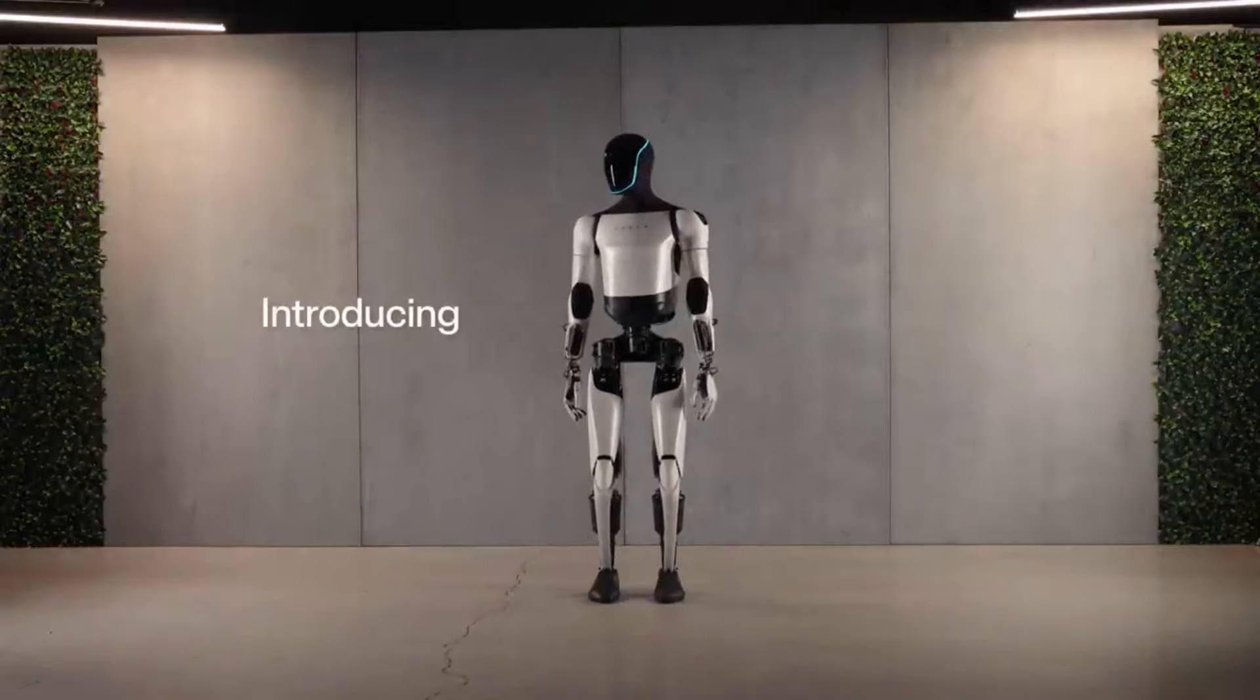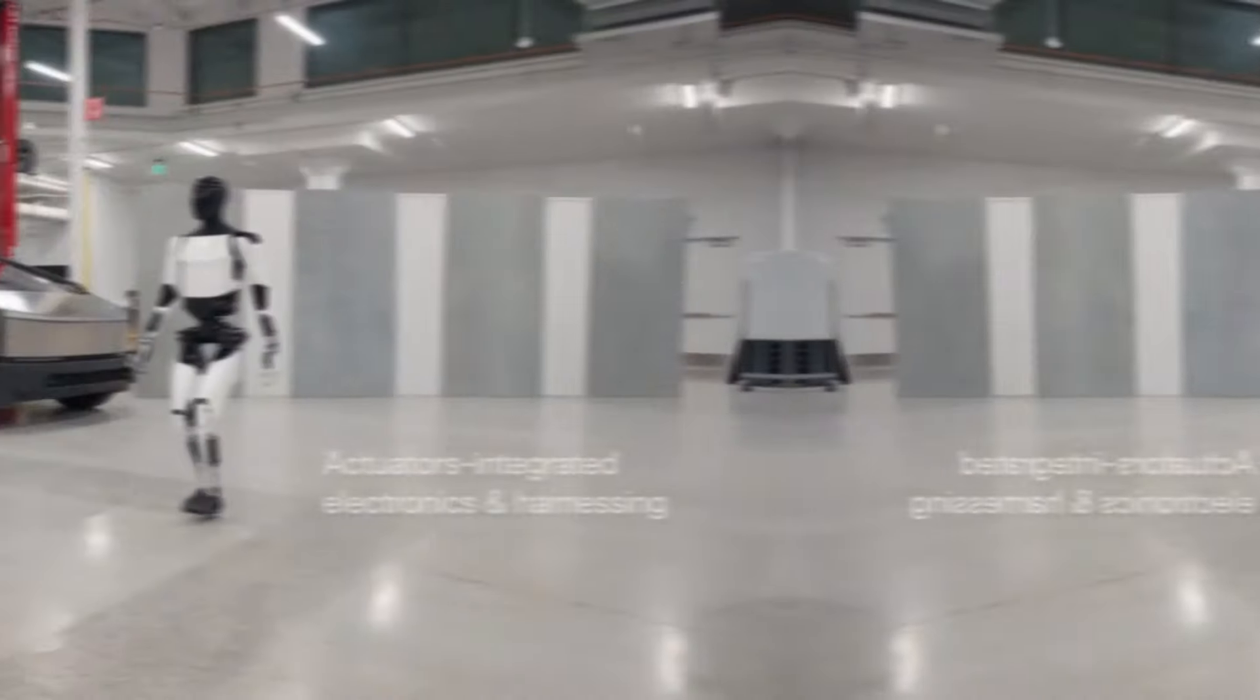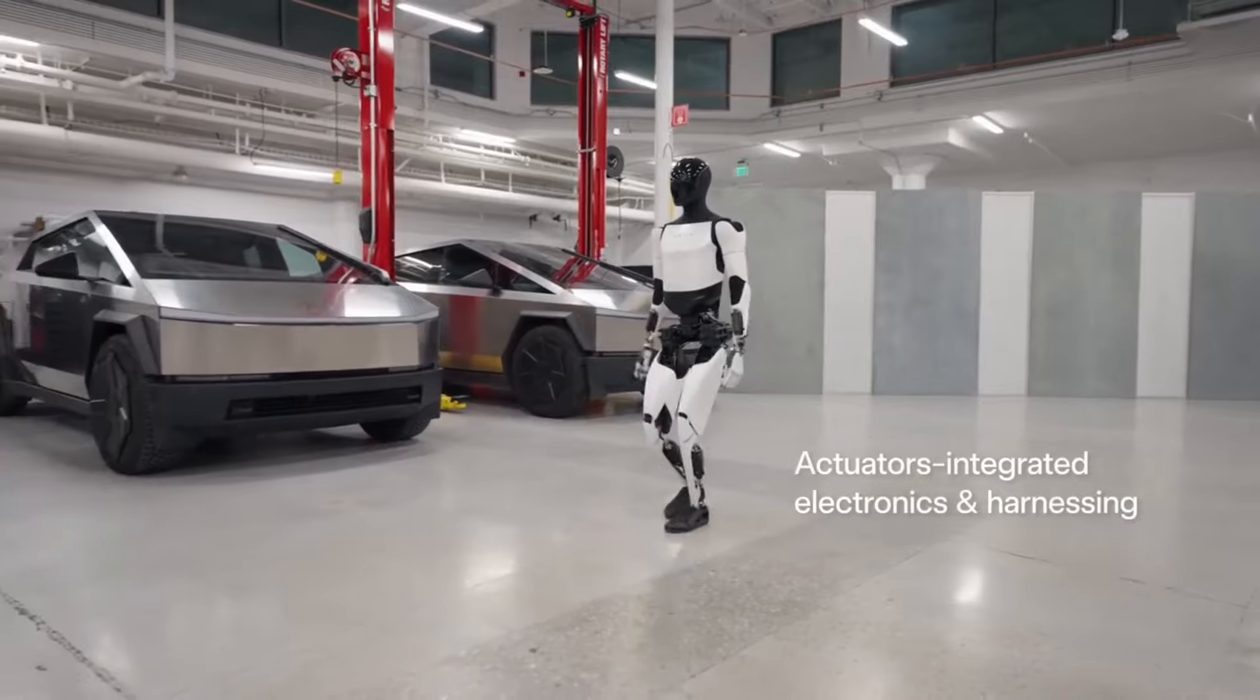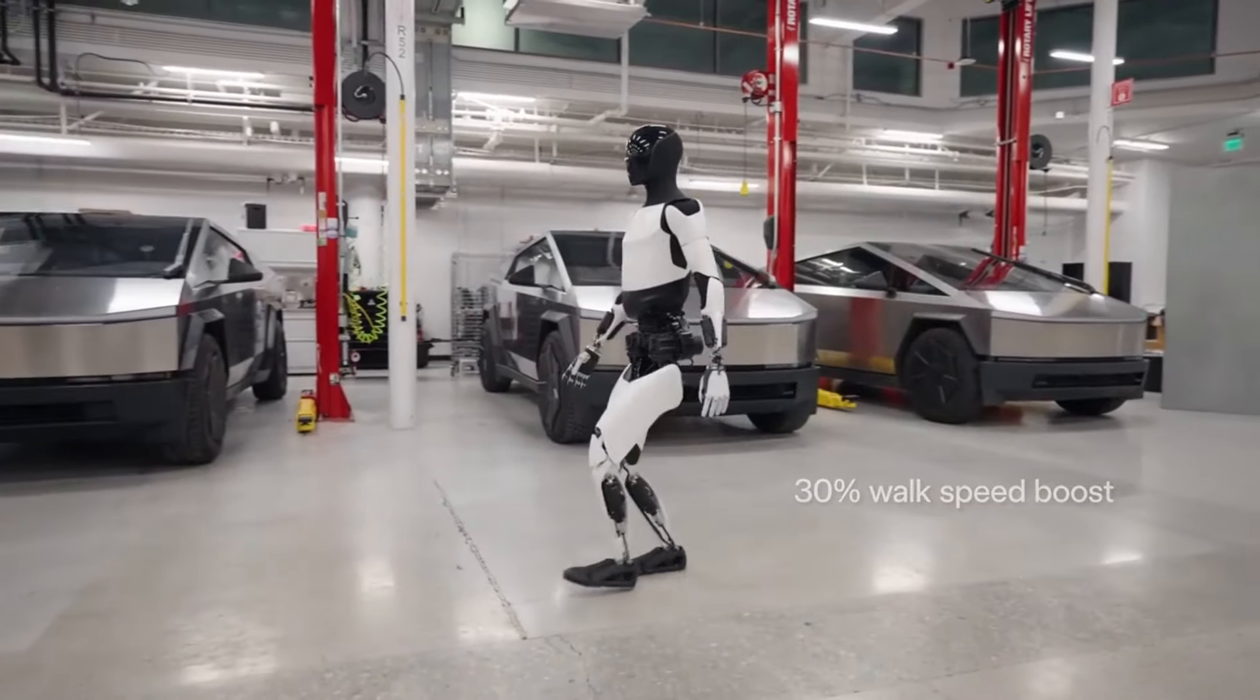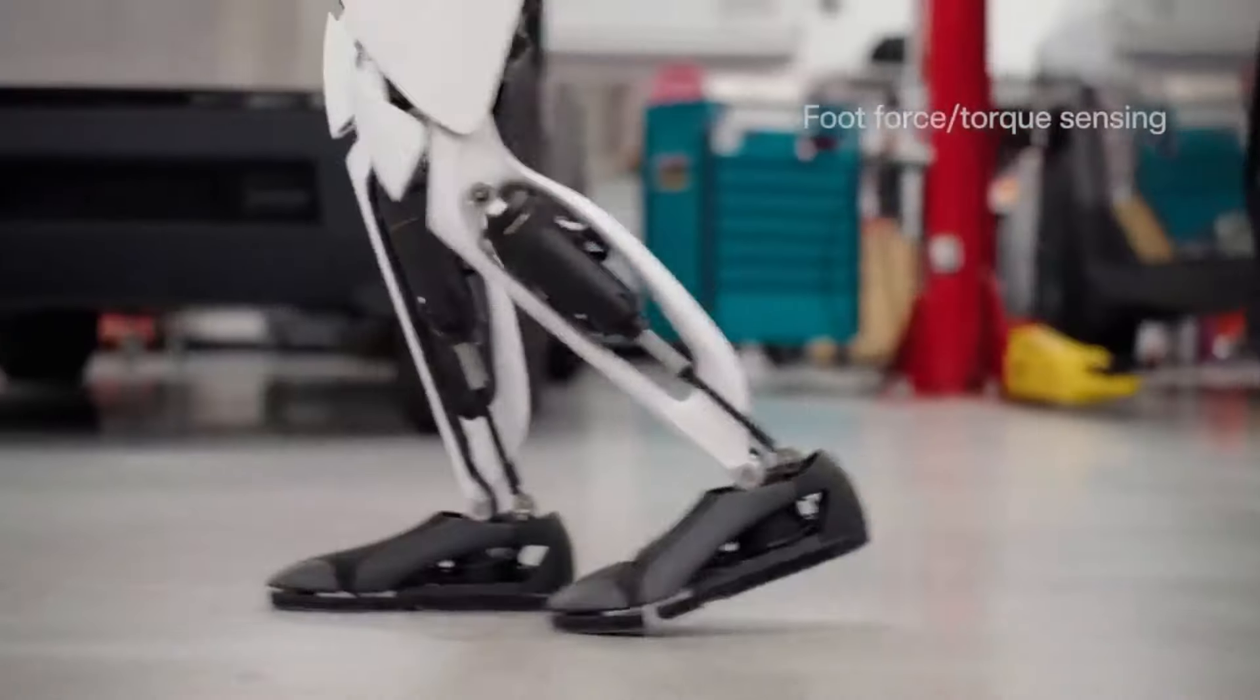Number 1. Optimus Gen 3. Kicking off our list is the Optimus Gen 3, Tesla's groundbreaking humanoid robot. Faster, lighter, and with more human-like movements.